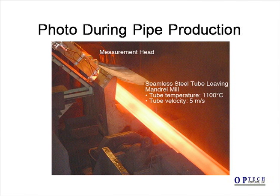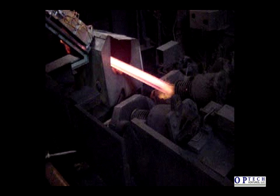In this photo, we see a pipe exiting the mandrel mill. In the next clip, we show a video at this same position. In this video clip, the pipe will be moving from upper left to lower right. It is a little hard to see the tube motion except at the end, where the end of the tube and the mandrel move into view.